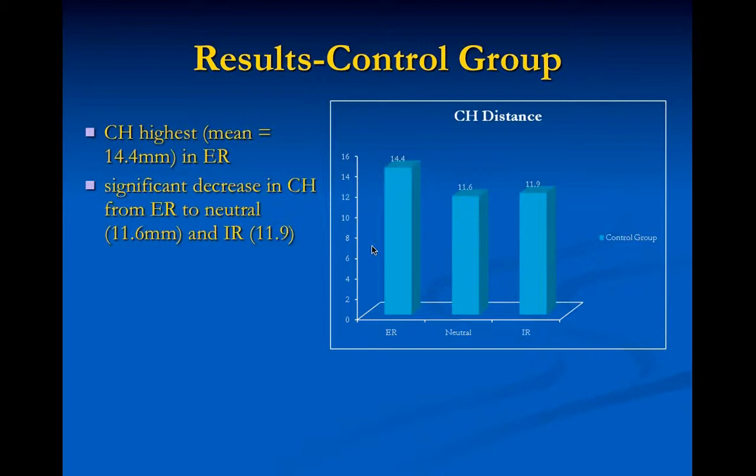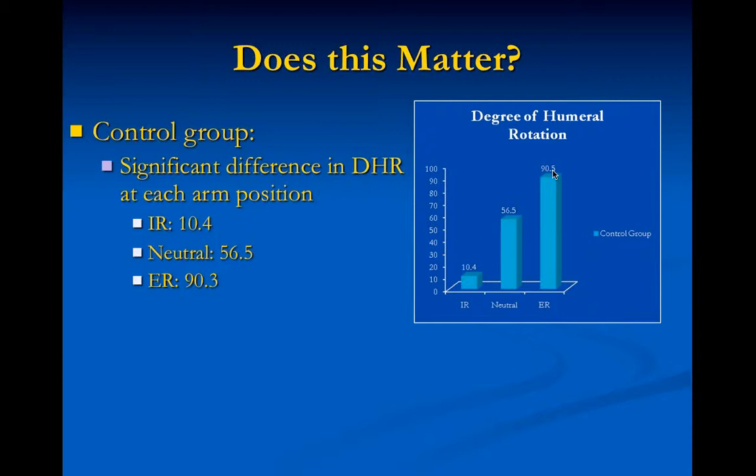We reviewed a large number of studies performed at our centers and at Kerlan-Jobe. All patients were supposed to be positioned with external rotation as we normally do for shoulders. But we found marked variation in the actual degree of internal and external rotation despite the fact that the techs were trained to image the patient in external rotation.